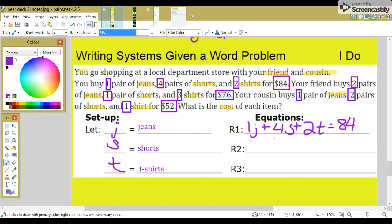The next sentence, equation two, is what your friend buys. And that is two jeans, one shorts, and three t-shirts. And that's for $76.